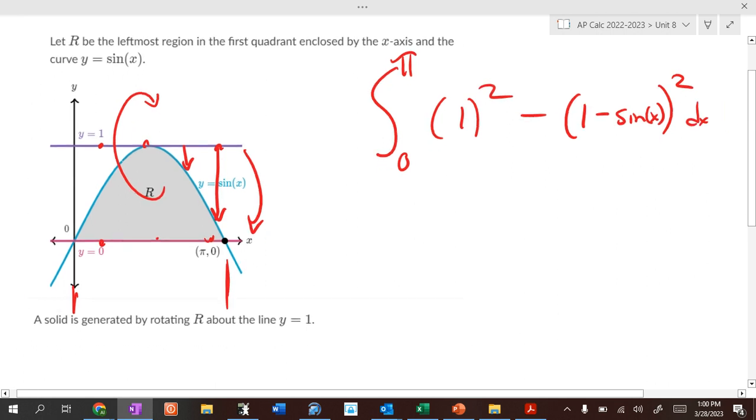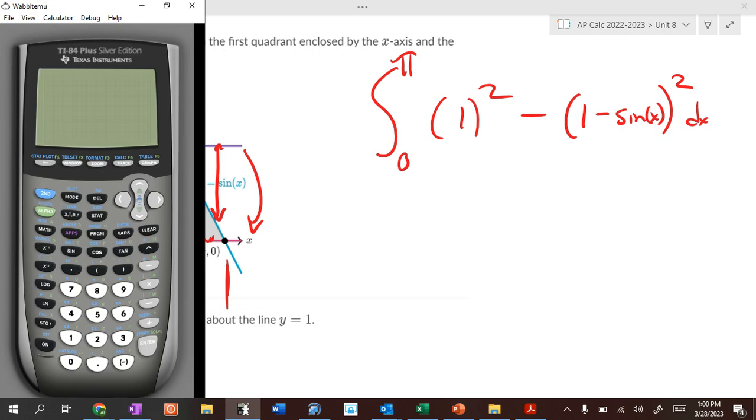So, throwing it on the graphing calculator, and this is where it gets, it's going to get a little bit goofy, because the graphing calculator even struggles with some of this. So, I'm going to go, math 9, from 0 to π, there we go, of 1 squared, which is still 1, minus parenthesis, 1, minus, sine of x. Sine of x. Close that parenthesis. Close the next parenthesis. And then square that, because we're squaring this part. So, you've got to be really careful with parenthesis.